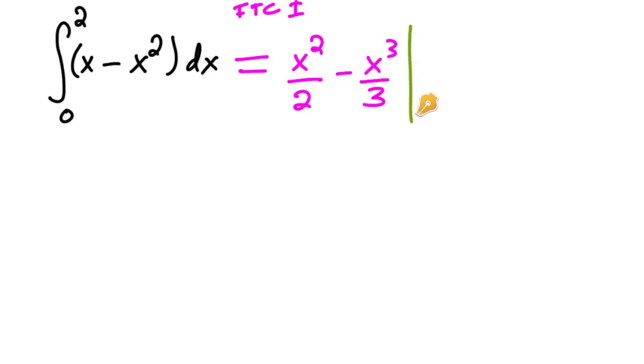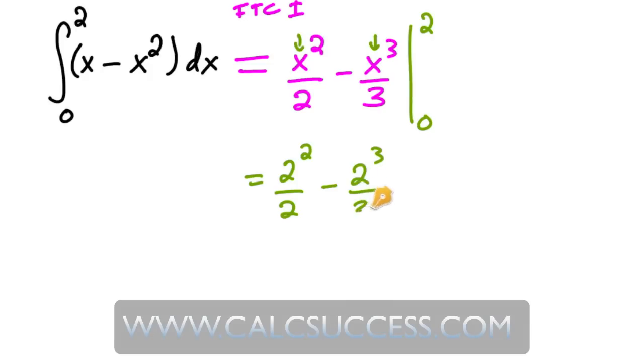The Fundamental Theorem of Calculus says plug in top minus the bottom. So then you plug in 2 into these, which is going to give you 2 squared over 2 minus 2 cubed over 3.